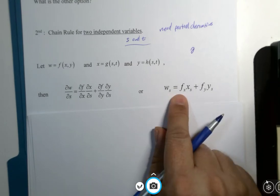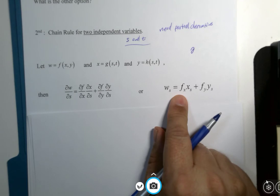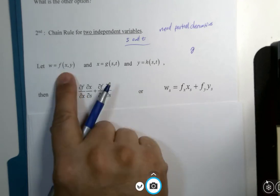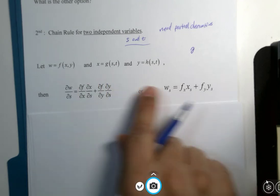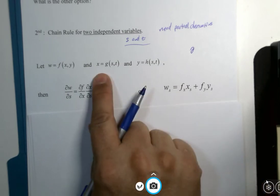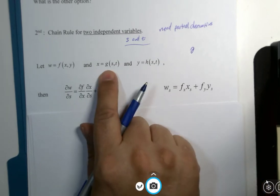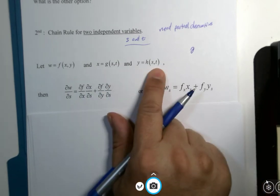So the x partial derivative and the y partial derivative of the original function are still there and added together. Then you take, if you're looking for s, the s derivative of both x and y.